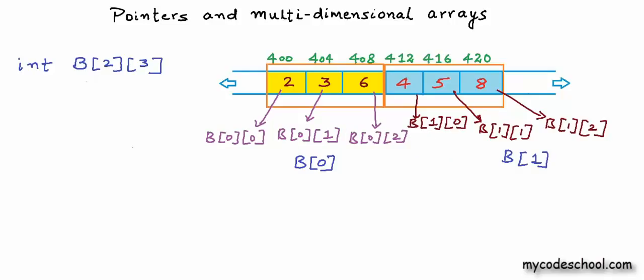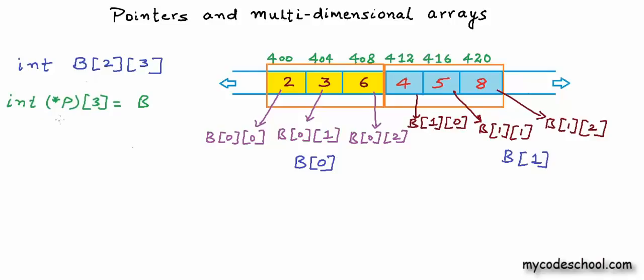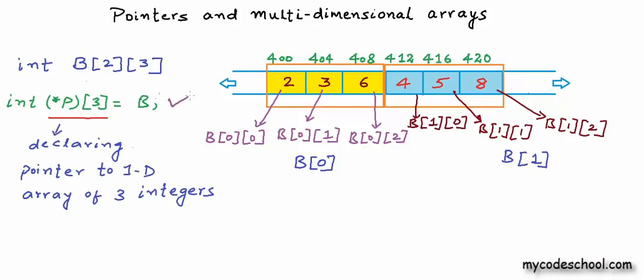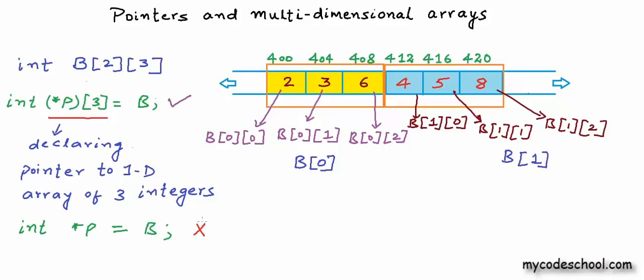As we saw in our previous lesson, when we just use the array name, it returns a pointer to the first element. Here b is a two-dimensional array — an array of one-dimensional arrays of size 3. So b will return a pointer to a one-dimensional array of three integers. We can declare a variable as a pointer to one-dimensional array of three integers. Writing int* p = b would not be correct because b does not return a pointer to integer; it returns a pointer to a one-dimensional array of three integers.